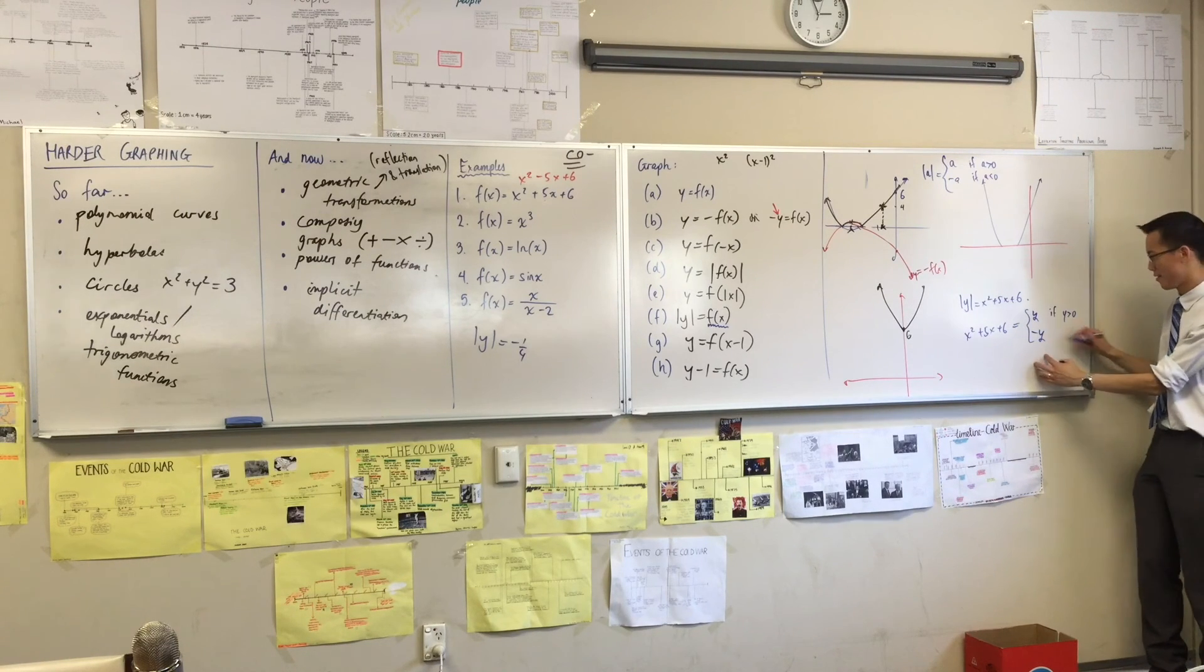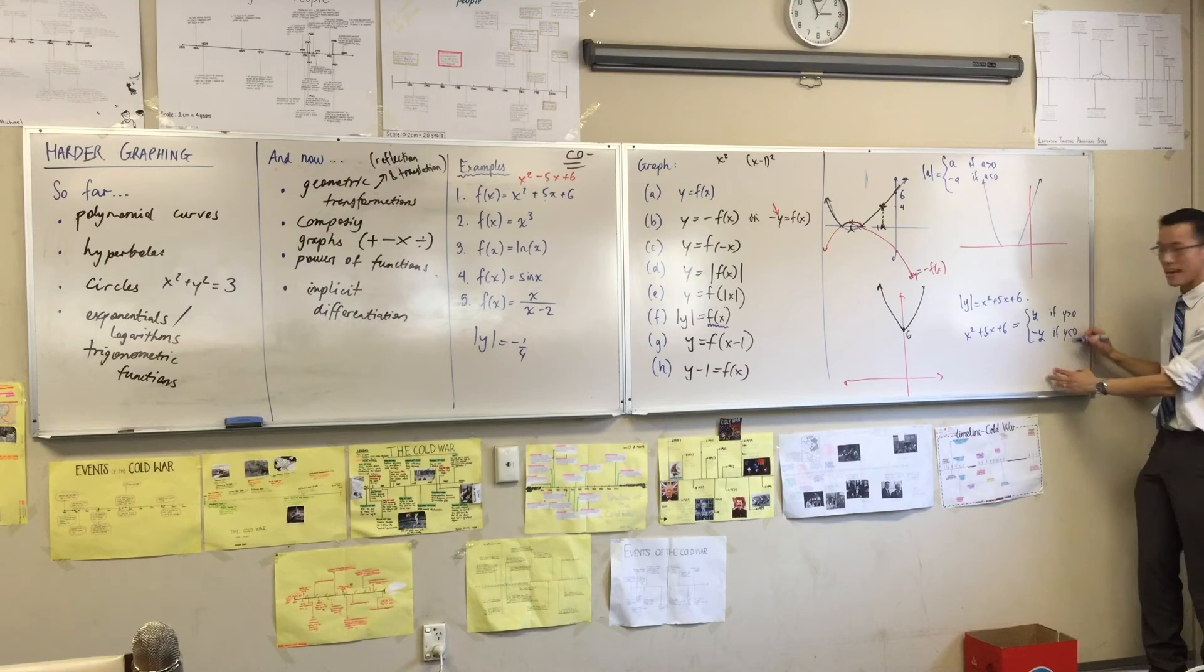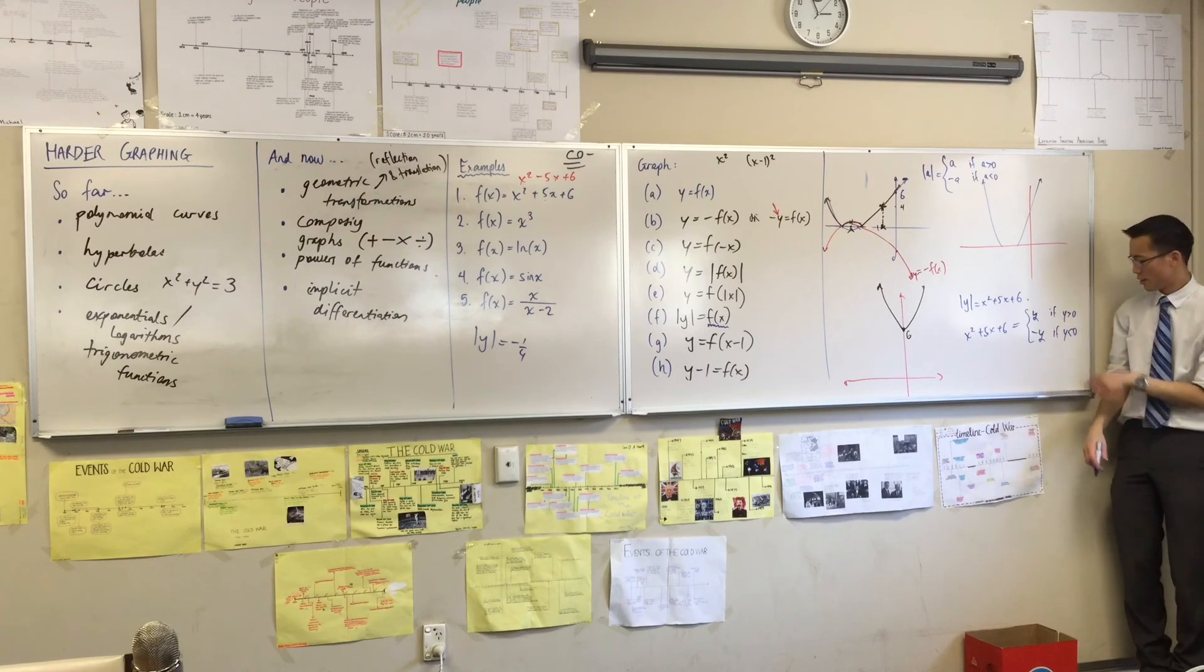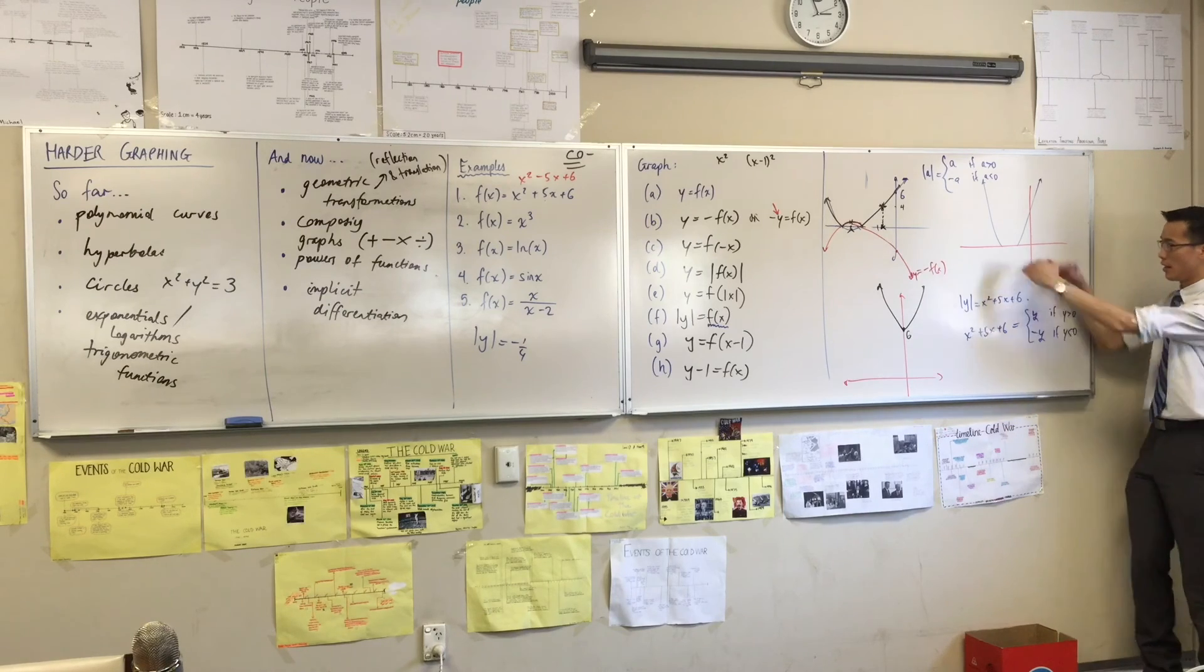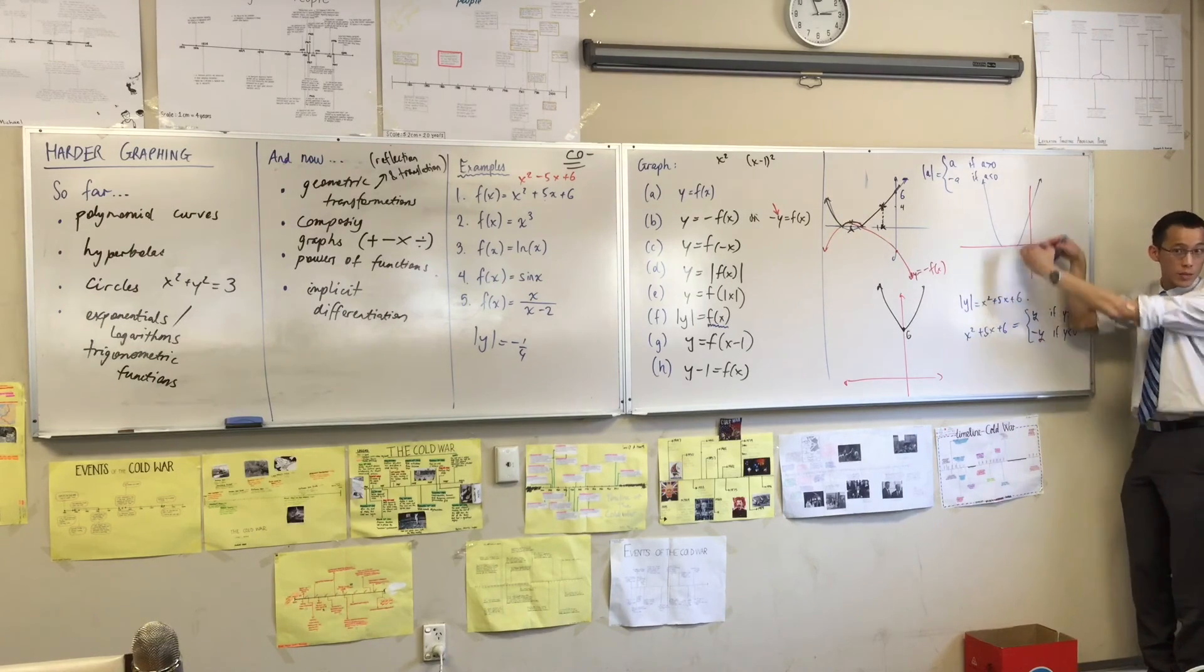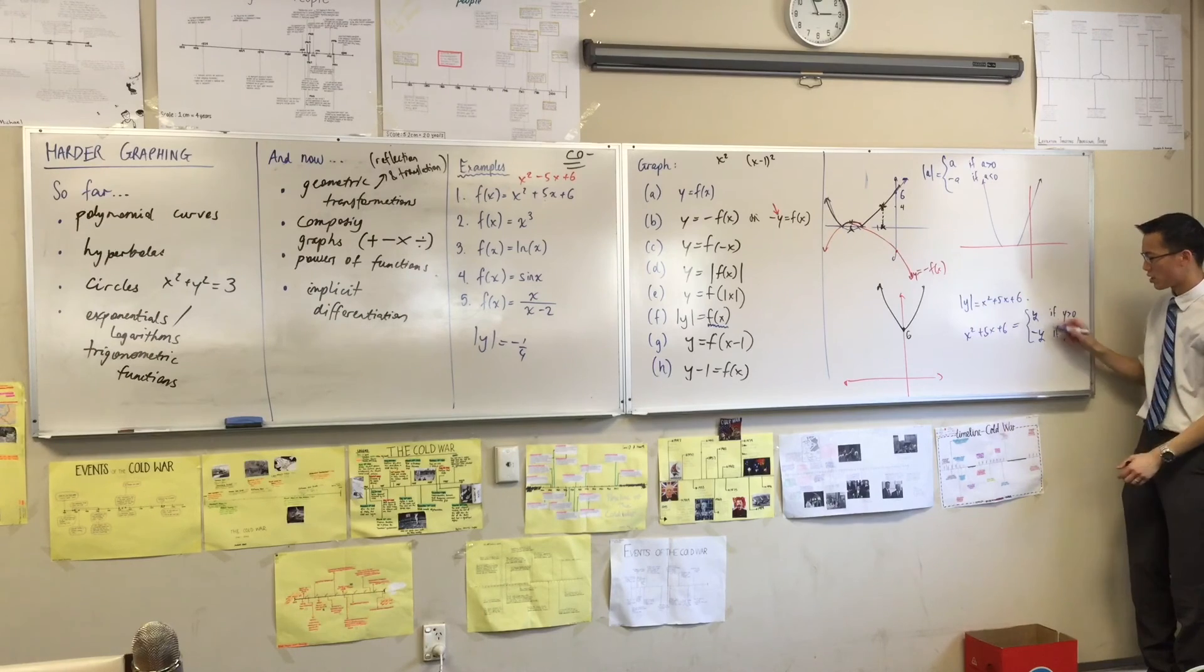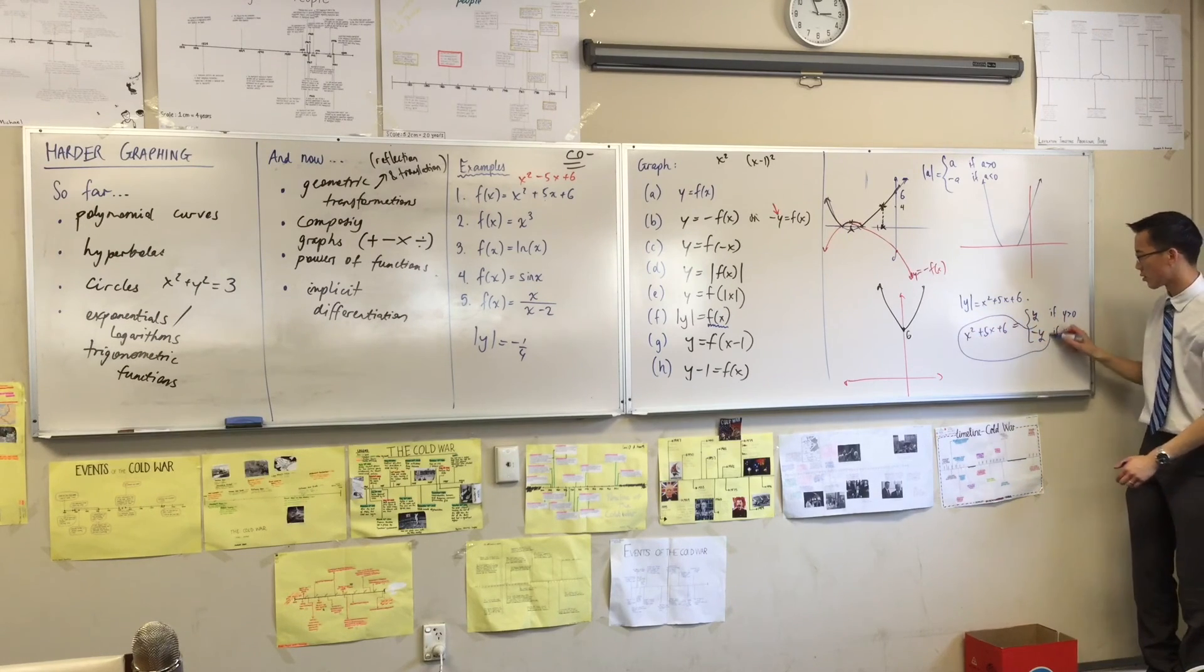What about this? When is it negative y? If y is negative. So now, where is this? Where is this part of the graph? It's everything down here. Do you agree? This is where y is less than zero. So can someone tell me, what does that thing look like?